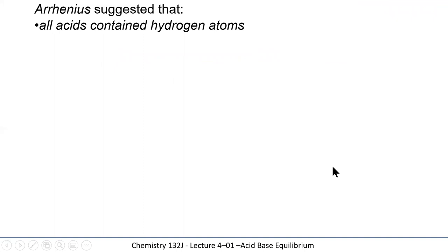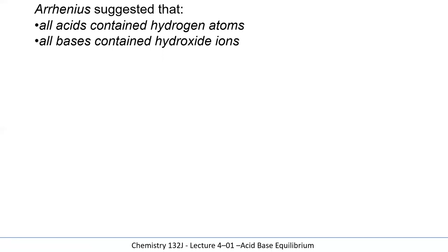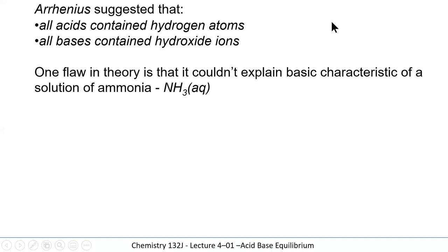Arrhenius also suggested that all acids must contain hydrogen ions and all bases must contain hydroxide ions, which is a flawed idea. This was proposed in the early 1900s. Arrhenius was also one of the first chemists to suggest that carbon dioxide in the air could lead to increased temperatures over time. His flaw was revealed when questioned about how ammonia acts like a base — ammonia doesn't contain hydroxide ions.